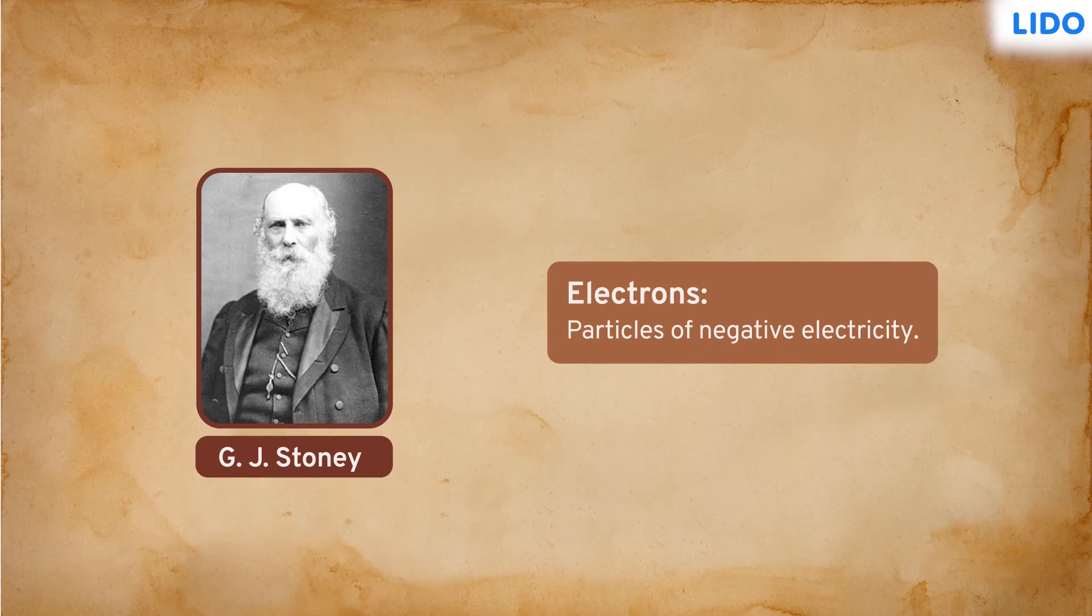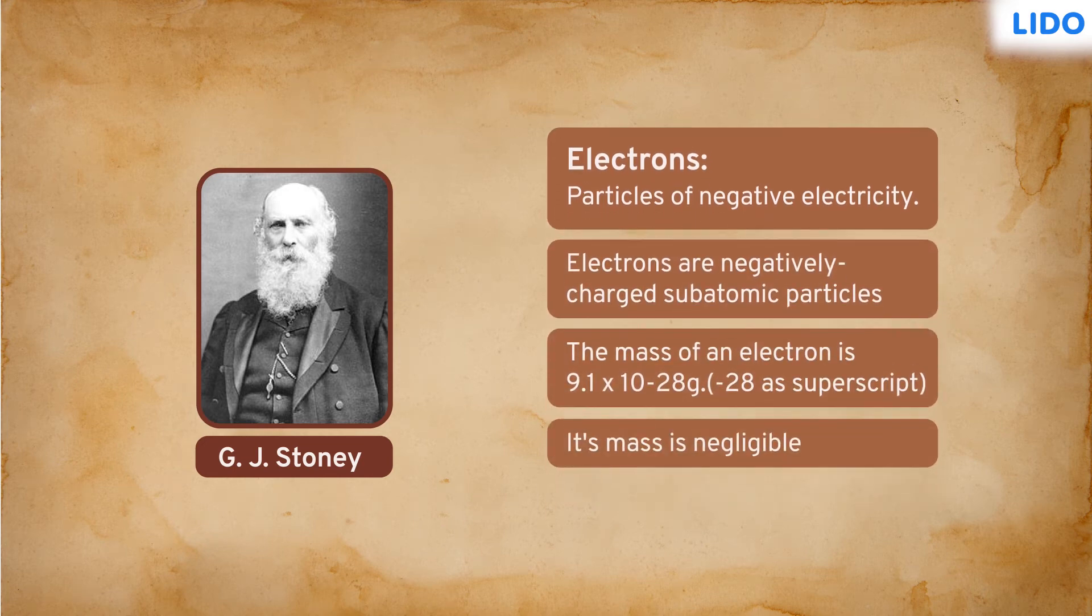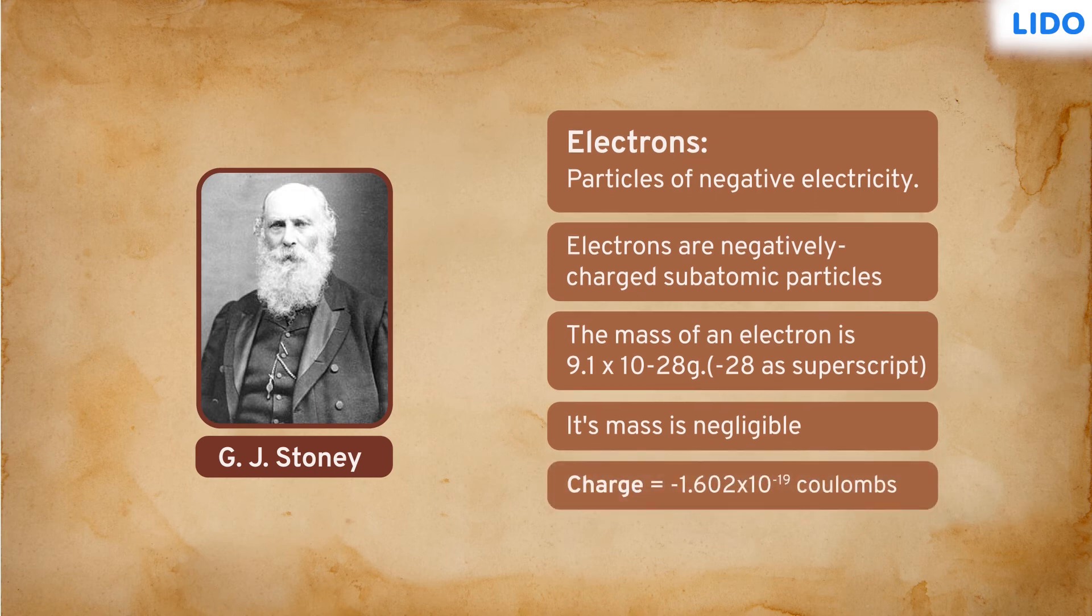These negatively charged particles were later called electrons by G.J. Stoney. That's how electrons were discovered. It was later found that electrons have a unit negative charge of magnitude -1.602 × 10^-19 coulombs.